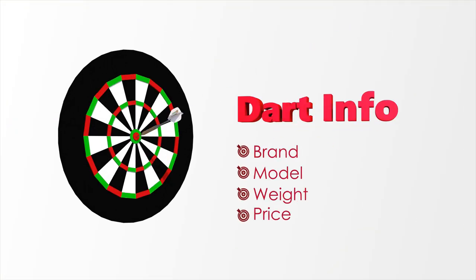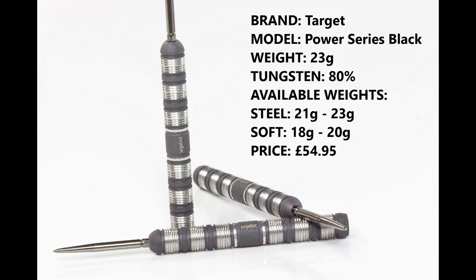Let's check them out. I'm reviewing the 23 gram version, they're 80 percent tungsten, they're also in 21 gram in steel tip and 18 and 20 grams in soft tip, and they retail for £54.95.